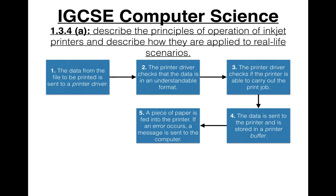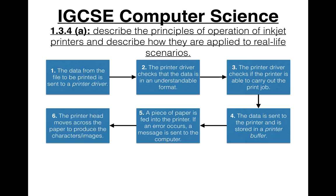Next, a piece of paper is fed into the printer. If an error occurs — such as being out of paper — a message is sent to the computer. The printhead then moves across the paper to produce the characters or images.